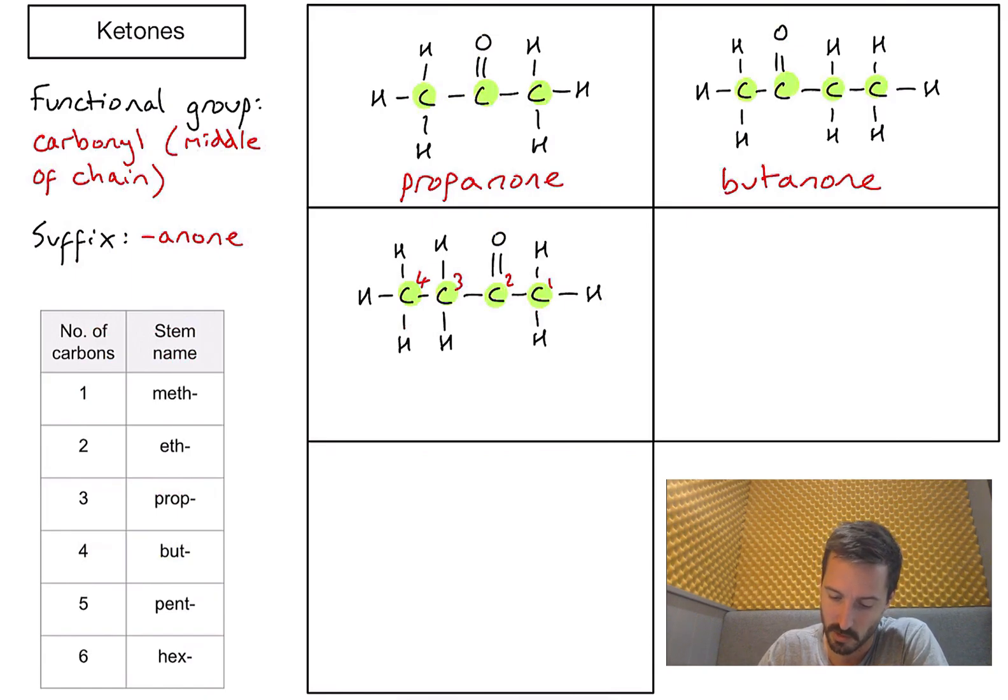And if I compare that to the previous example, where I would have to number my carbons from the left side, one, two, three, four. Again, actually, it's on my second carbon. So because those two structures are effectively identical, we don't need to put a number. We don't need to write butan-2-one. It's the only place that that carbonyl group can actually be.